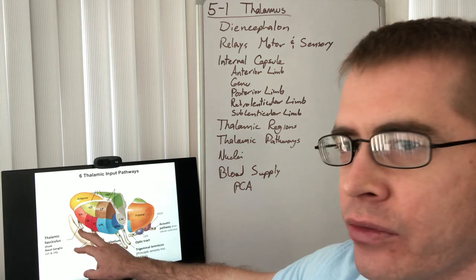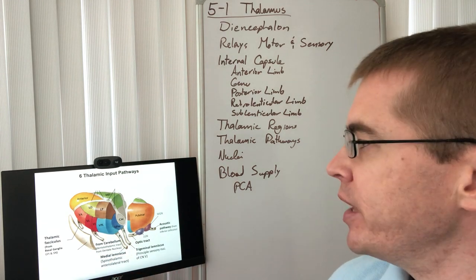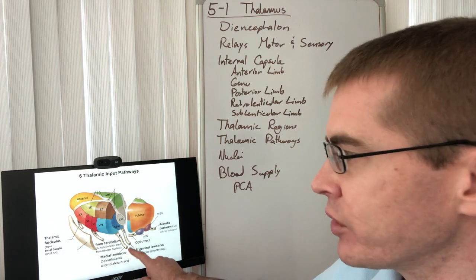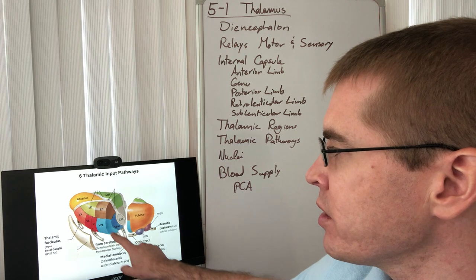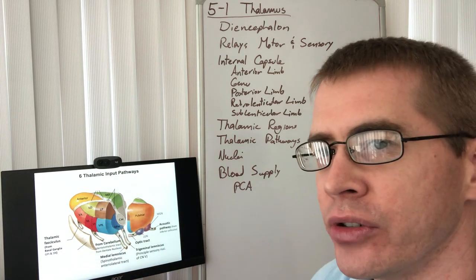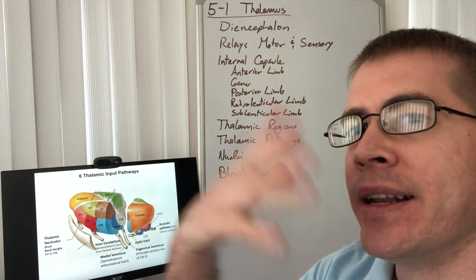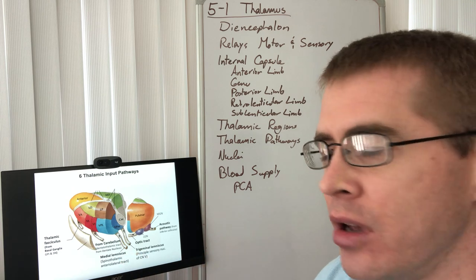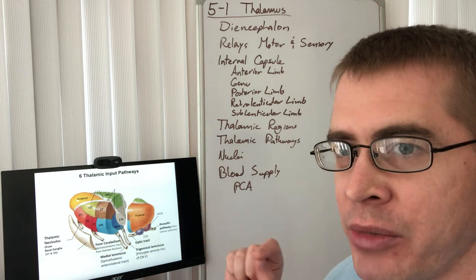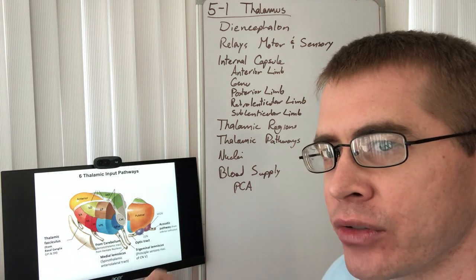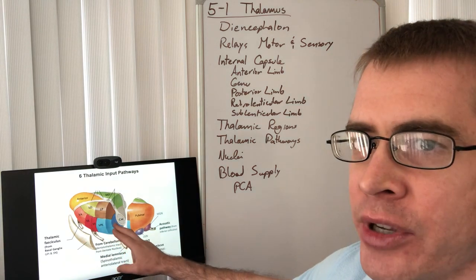The medial lemniscus from the spinothalamic and anterior lateral tracks heads into the VPL of the thalamus — this is where the ascending spinothalamic tract sends its sensory information. The head and neck use a different sensory system — the trigeminal system — and that trigeminal information comes into the VPM of the thalamus via the trigeminal lemniscus, carrying information from the trigeminal sensory nuclei to the thalamus and then to the cortex.